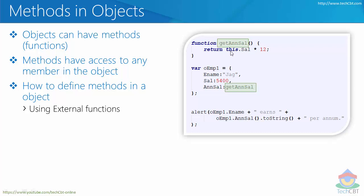Internally the method uses the keyword `this`. Whenever we say `this`, it automatically refers to the current object. So if getAnnualSalary is executed as part of this object, `this` resembles OEMP. Behind the scenes it executes OEMP.sal multiplied by 12, fetching the value 5400, and that result is returned and displayed. That is how external functions can be assigned as methods to existing objects.